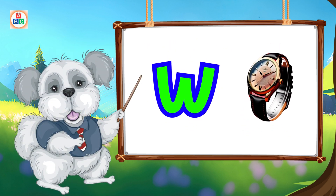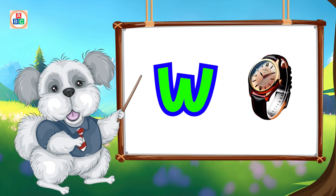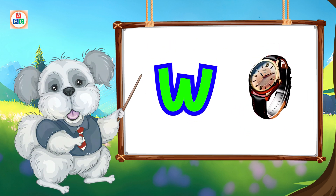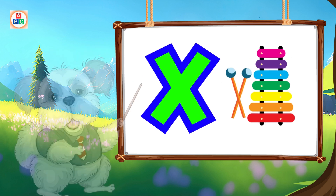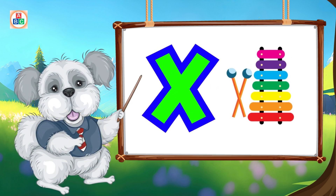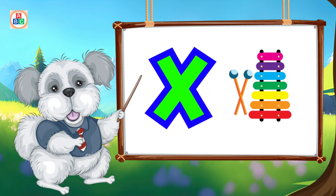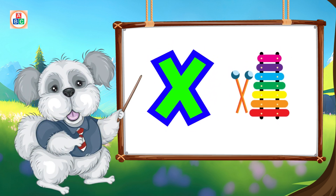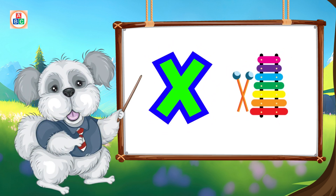W is for watch, w-w-watch. X is for xylophone, z-z-xylophone.